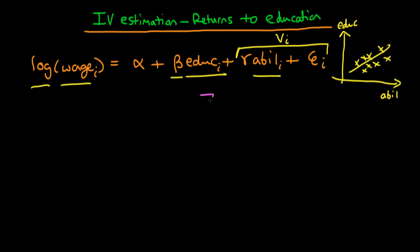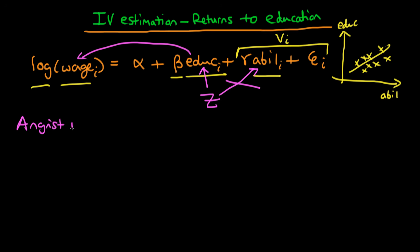The idea is that we are looking for some instrument Z which affects an individual's level of education but importantly doesn't affect their level of innate ability. By changing Z we're changing education, which then has a knock-on effect on wages, and we know the changes in wages are only due to education for this particular instrument Z. In this video we're looking at the work Angrist and Krueger did in 1990, who were particularly interested in estimating the returns which education has on log wage.